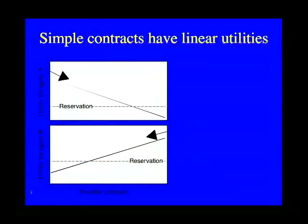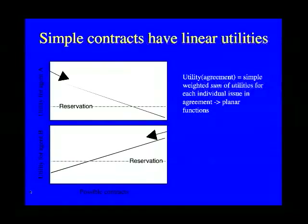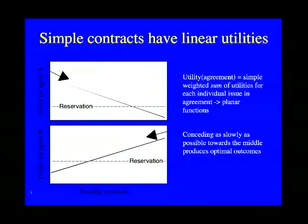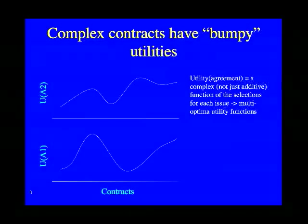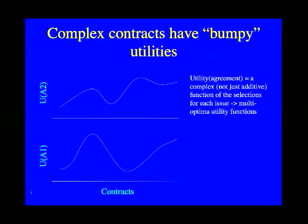Looking more closely, simple contracts have what we can call linear utilities — their utility functions, which give the utility of a contract for each agent, tend to be planar. This is because they are calculated as a simple weighted sum of the utilities for each individual issue. When we have these linear utility functions, conceding slowly towards the middle produces optimal outcomes. On the other hand, complex contracts with dependencies have bumpy utility functions with multiple optima, because they are not just additive functions of the selections for each issue.